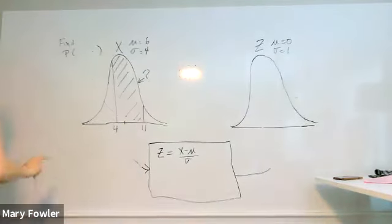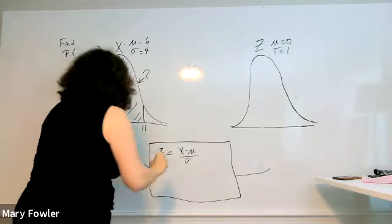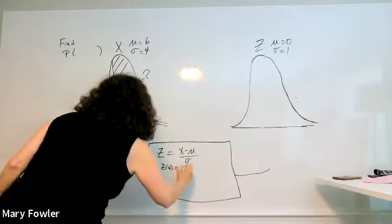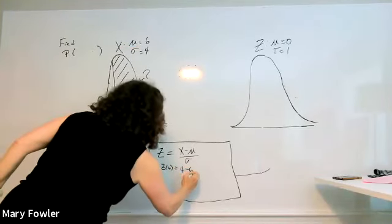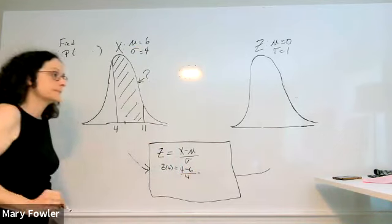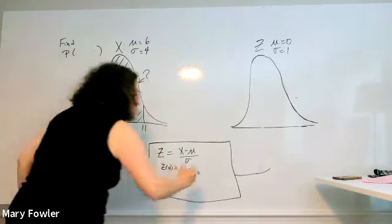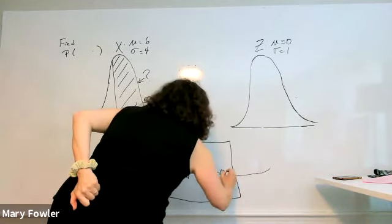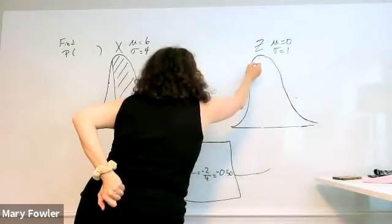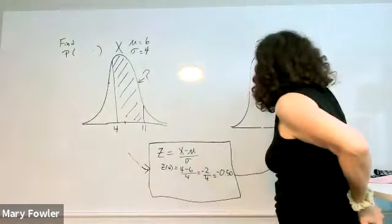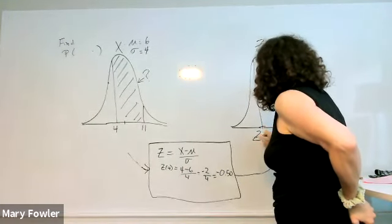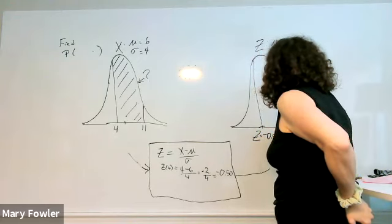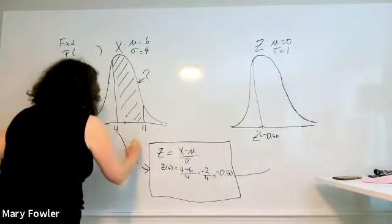So now 4 and 11 both have to go in for transformation. So Z of 4 is equal to 4 minus 6 over 4. And that's minus 2 over 4, negative 0.50. So that's going to come out here.